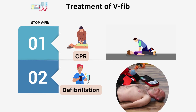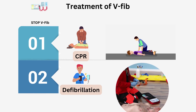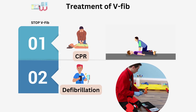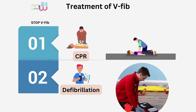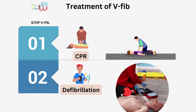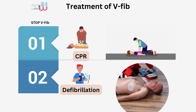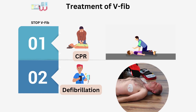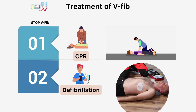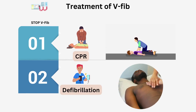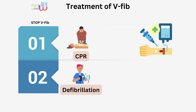Next is defibrillation, also called cardioversion. An automated external defibrillator or AED delivers shocks through the chest wall to the heart and can help restore a regular heart rhythm. As soon as an AED is available, apply it and follow the prompts. Public use AEDs are programmed to recognize ventricular fibrillation and send a shock only when needed. Other treatments to prevent future episodes include medications, medical devices, and surgery.